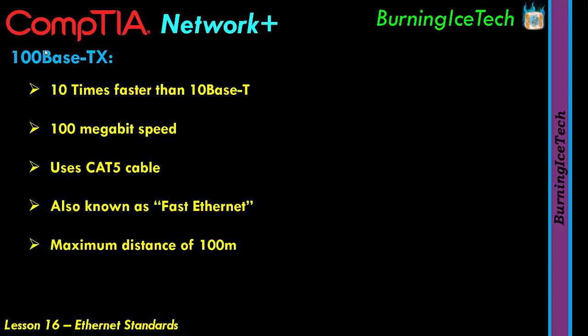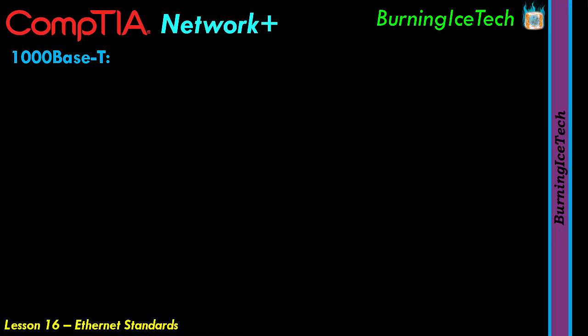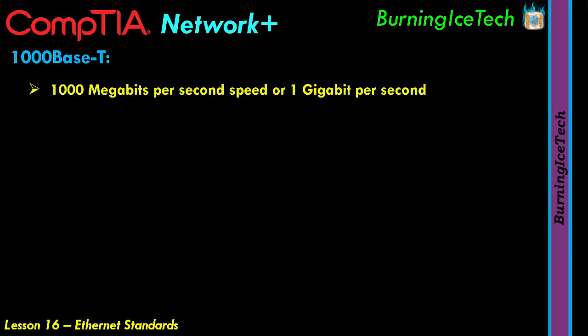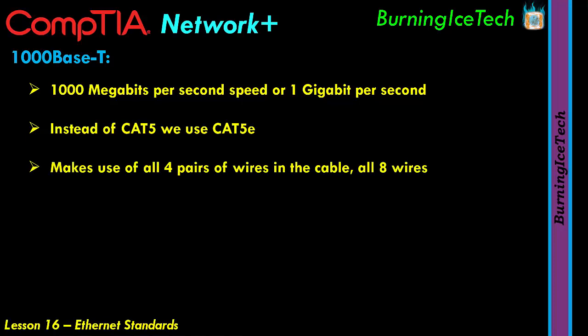Another Ethernet standard on our list is the 1000BaseT. With this standard, we drastically improved on the 100BaseTX. The speed is up to 1000 megabits per second — or 1 gigabit per second. Instead of CAT5 cable, this standard makes use of CAT5e cable. You're not really going to be able to find CAT5 cable anymore — only CAT5e and better. The 1000BaseT uses all four pairs of wires inside the cable — all eight wires. The maximum distance is the usual 100 meters.